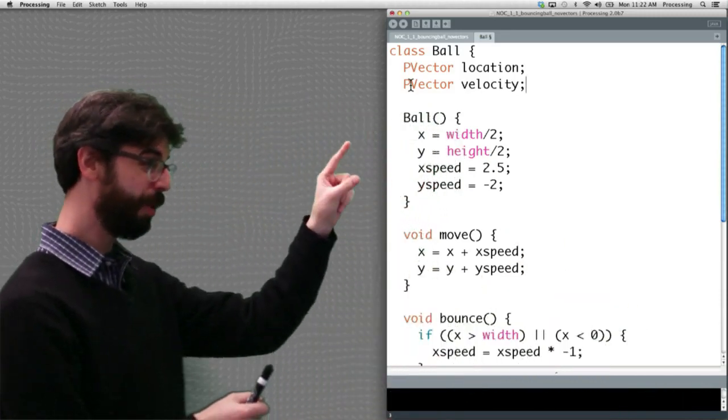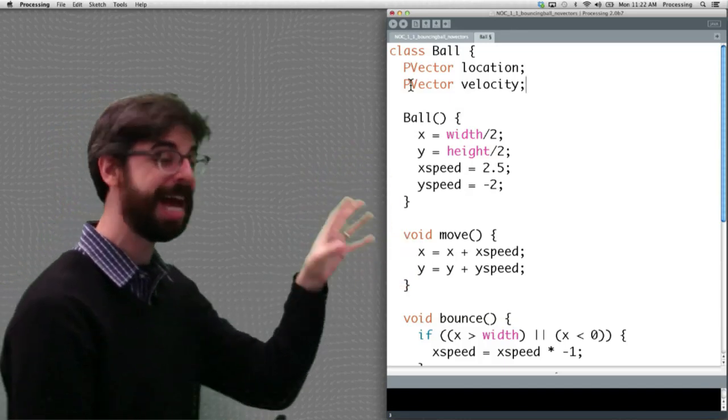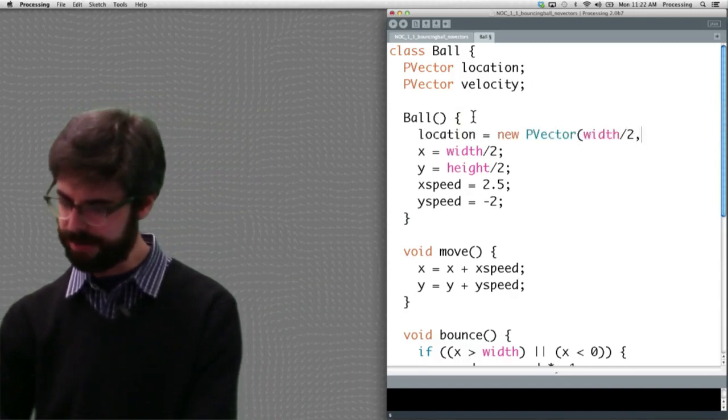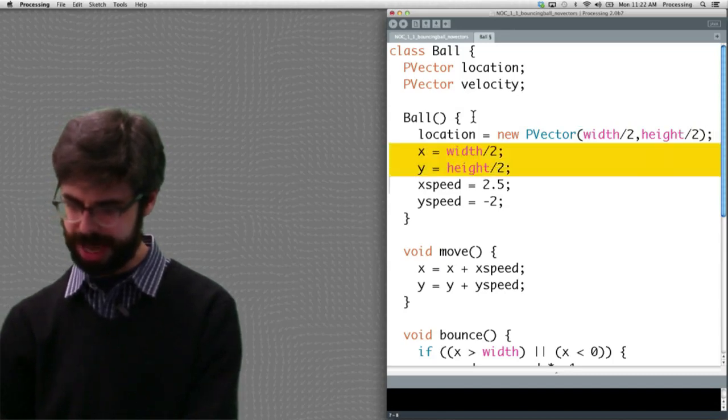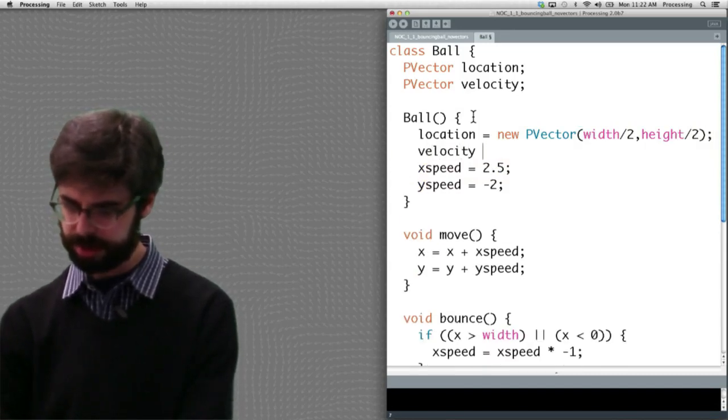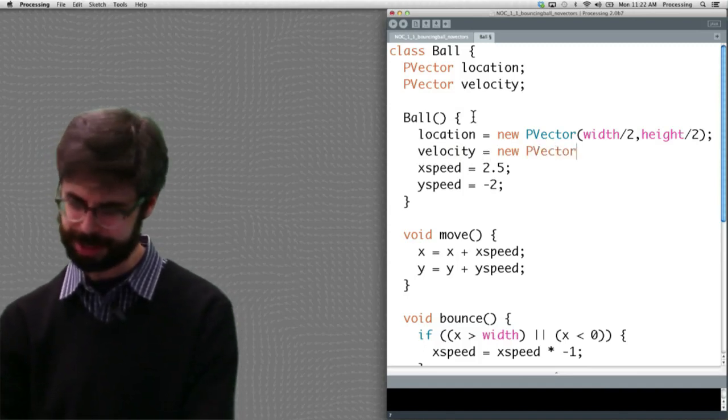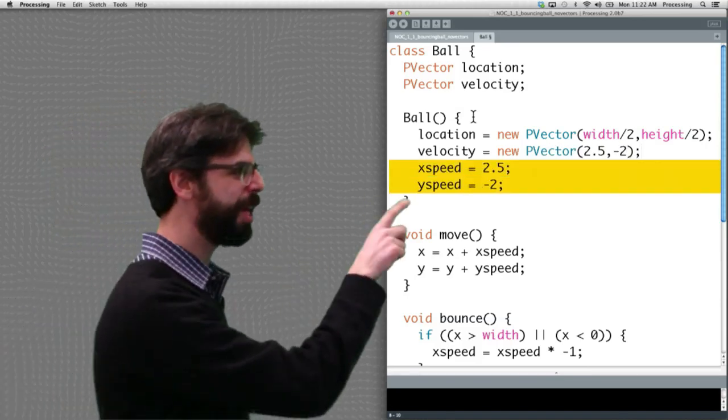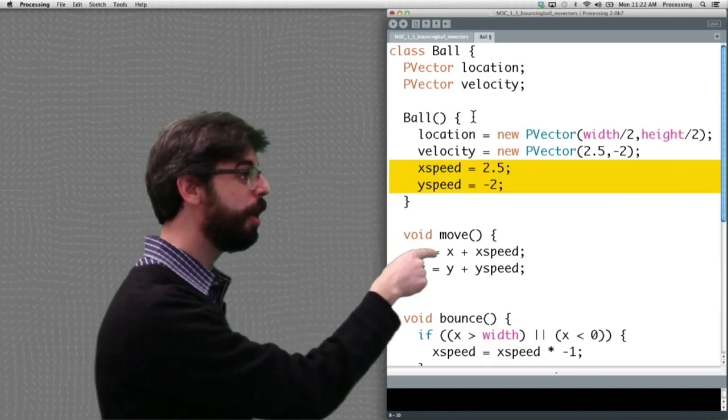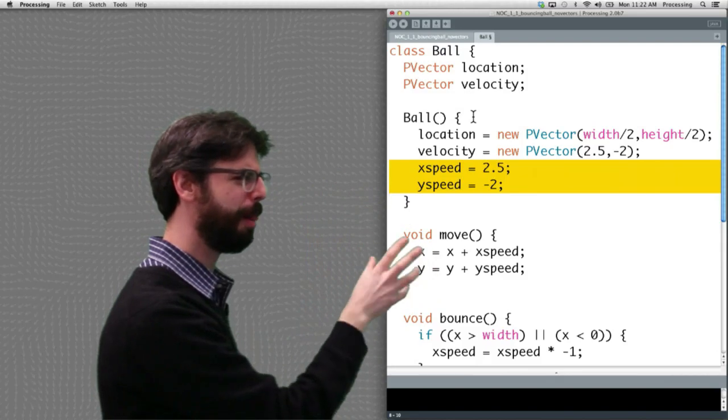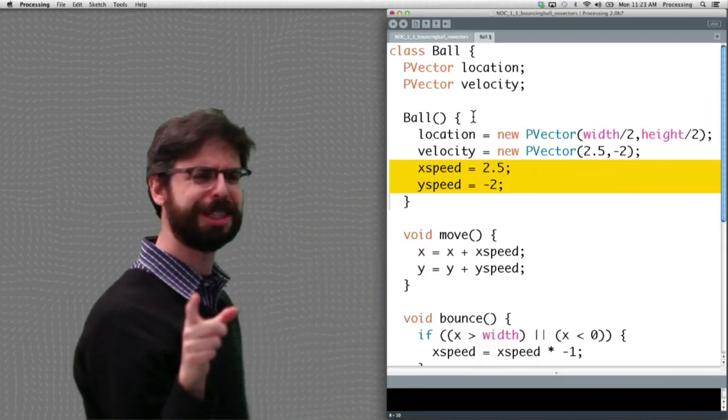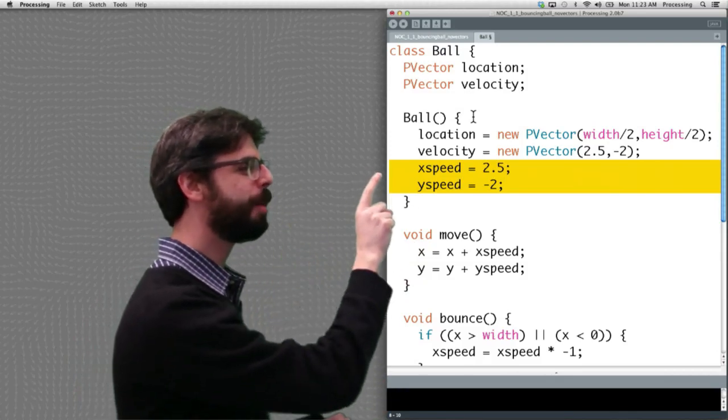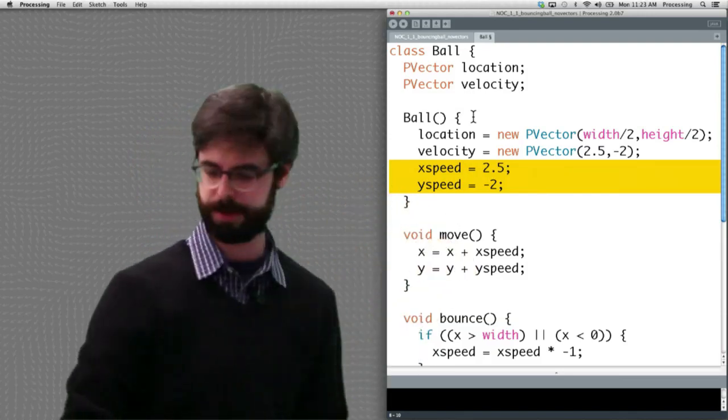So now we have to look at the constructor. We initialized x and y separately, xSpeed and ySpeed separately. Now we're going to do that with vectors. Now we're going to say location equals new PVector, same values, and velocity equals new PVector. So we can see here, all I'm doing is replacing each individual variable being initialized individually. Velocity, now we initialize it as a PVector with two arguments. Got it.